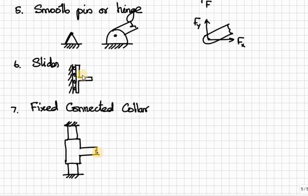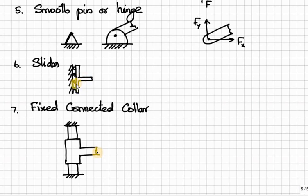The next is slider. This is different from roller support because here we have a fixed arm. It can move in one direction - there is no resistance - but it cannot move perpendicular to that direction, meaning there is a reactive force perpendicular to the sliding surface. In addition to the reactive force, it will have a moment resistance because the longer arm can resist rotation. So it has two reactive forces: one perpendicular to the surface and another one is moment or rotational resistance.